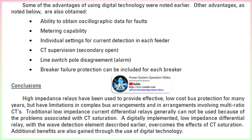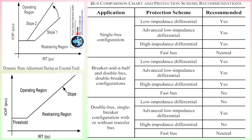A novel bus configuration program is used with this relay to allow the user to input their specific bus arrangement. The program then generates wiring diagrams along with specific instructions to allow the relay to be built. The relay contains all necessary auxiliary CTs to allow ratio matching in the event that different ratio CTs are involved. Additional advantages of digital technology include: ability to obtain oscillographic data for faults, metering capability, individual settings for current detection in each feeder, CT supervision for secondary open, line switch pole disagreement alarm, and breaker failure protection for each breaker.